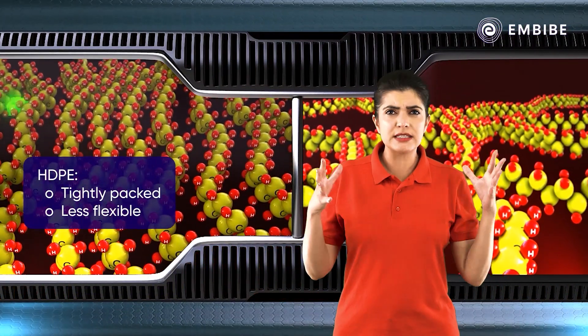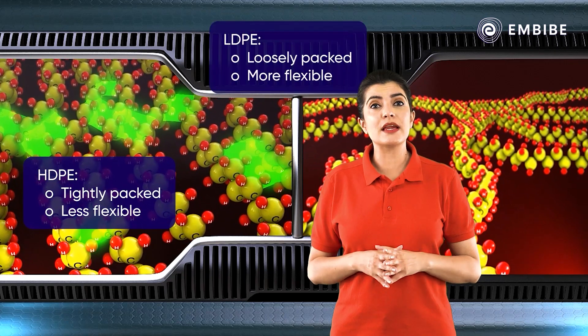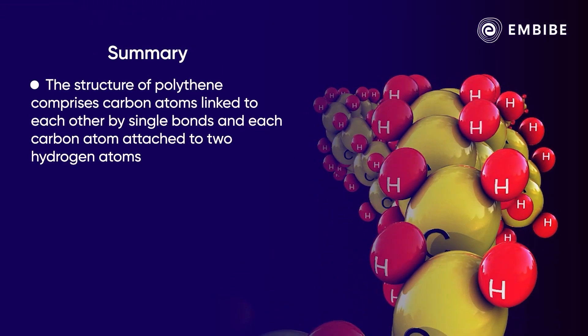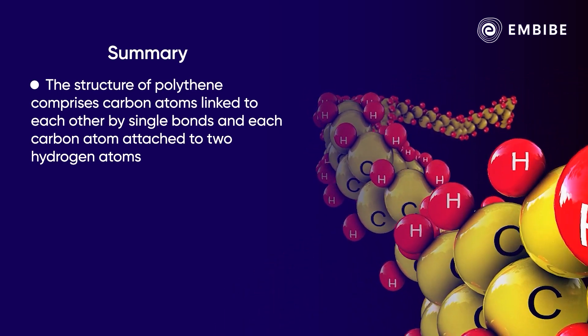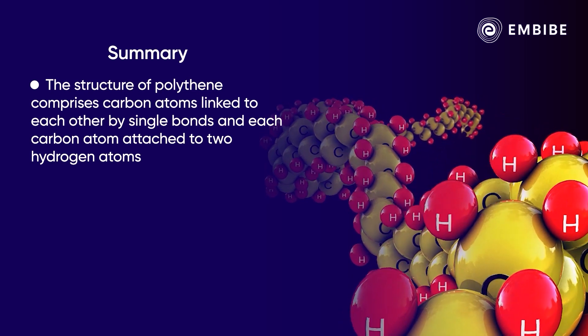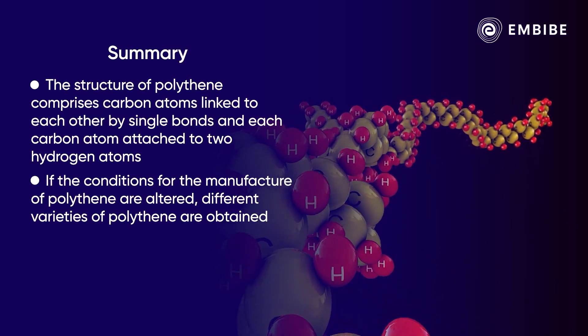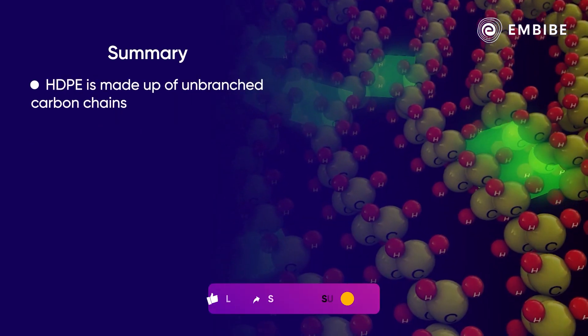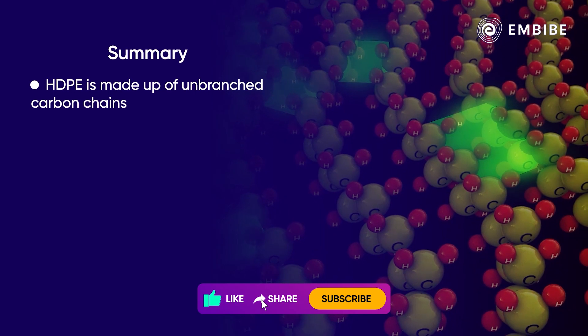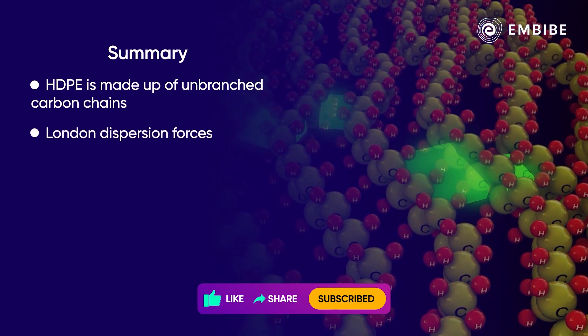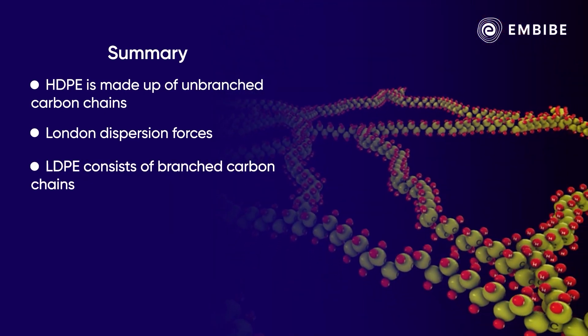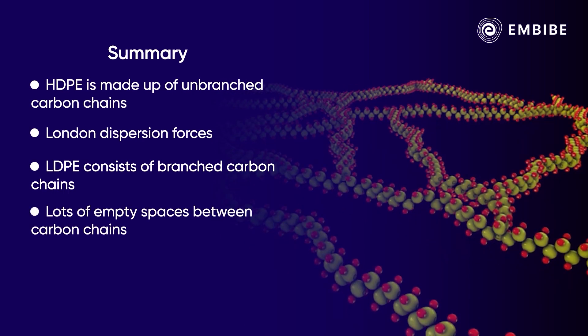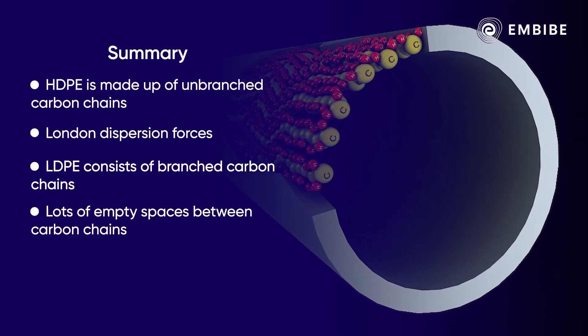To summarize, the structure of polythene comprises carbon atoms linked to each other by single bonds, and each carbon atom attached to two hydrogen atoms. If the conditions for the manufacture of polythene are altered, different varieties of polythene are obtained. While high-density polyethylene (HDPE) is made up of unbranched carbon chains held together by London dispersion forces, low-density polyethylene (LDPE) consists of branched carbon chains with lots of empty spaces between them. Consequently, HDPE finds application for making sturdy objects like pipes, while LDPE is commonly used in cling films.